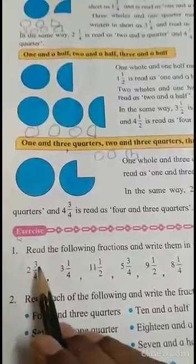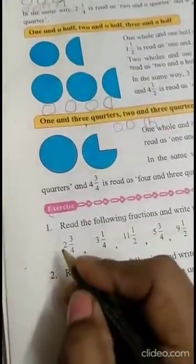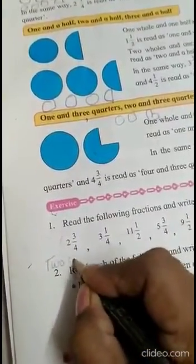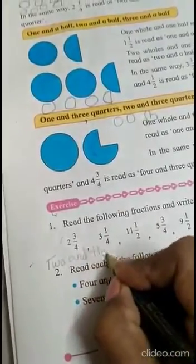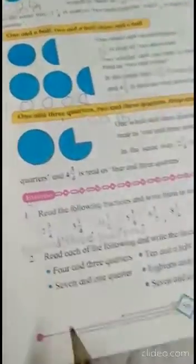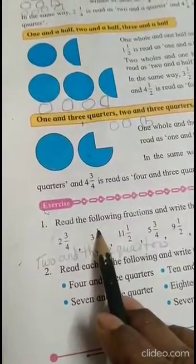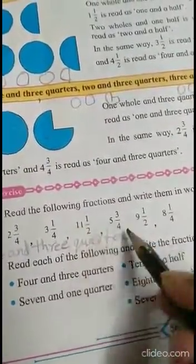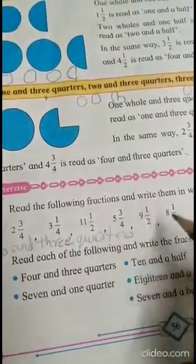Now the first sum: it is given 2 and 3 upon 4. Two and 3 upon 4 means we will write in words: two and three quarters. Next one: 3 and 1 upon 4 — that is three and a quarter. So 11 and 1 by 2 — that will be eleven and a half. Now 5 and 3 upon 4 — that is five and three quarters. Nine and a half. Eight and a quarter.